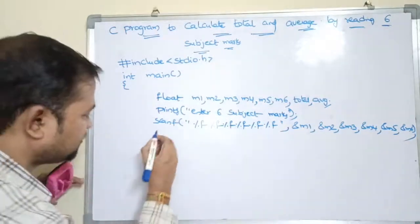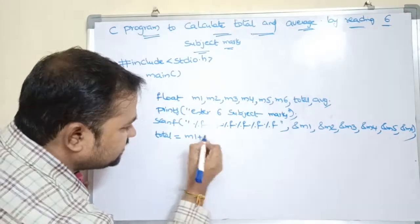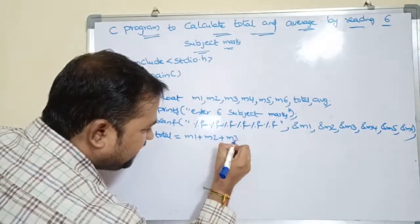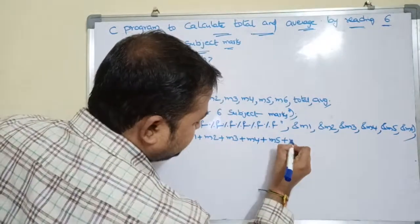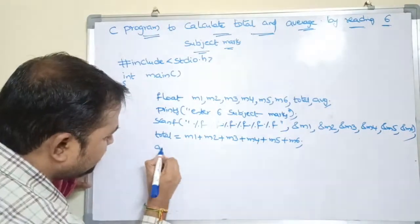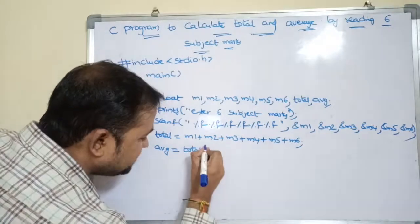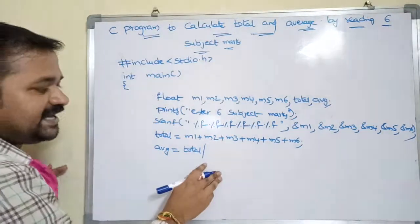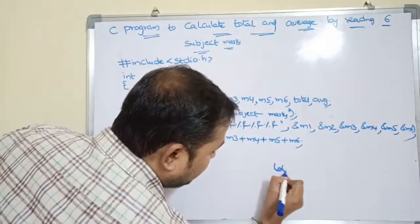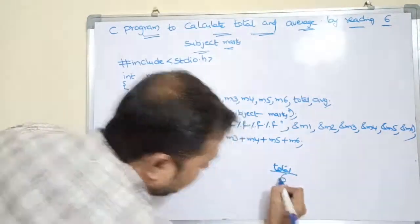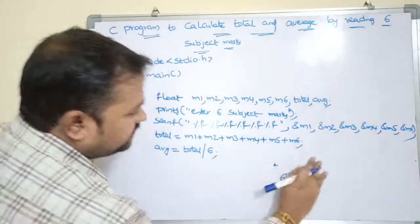Next we have to do the calculations. So what is the formula for total? total = m1 + m2 + m3 + m4 + m5 + m6. Next we have to calculate the average. In C language the forward slash specifies division. So average = total / 6.